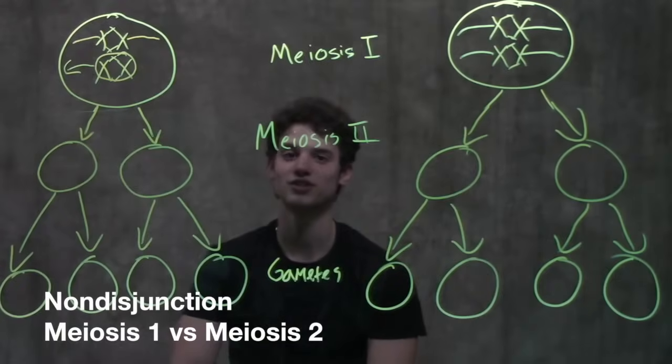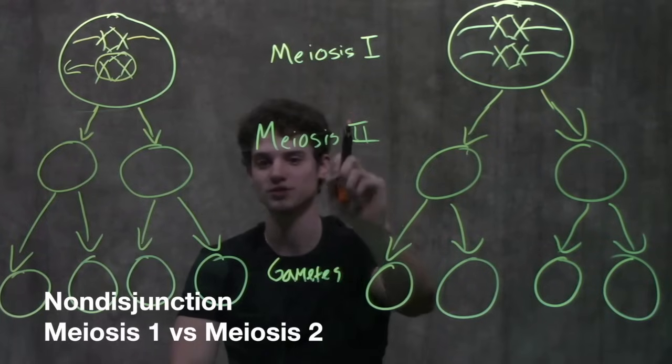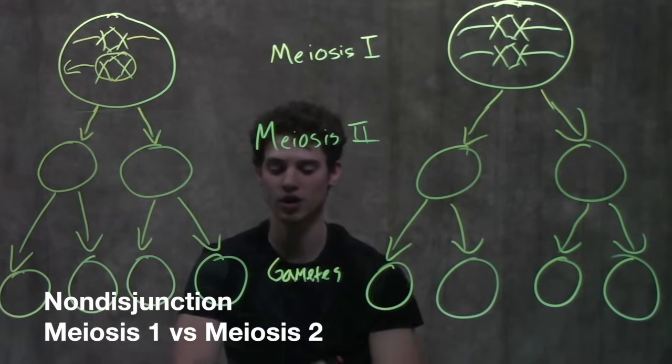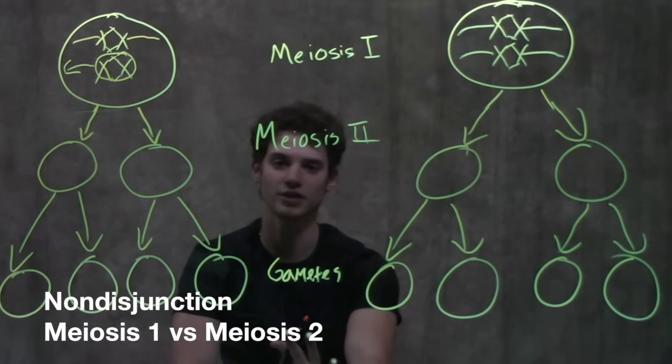Hello, today we're talking about nondisjunction in meiosis I versus meiosis II, which results in an abnormal chromosome count in the gametes.